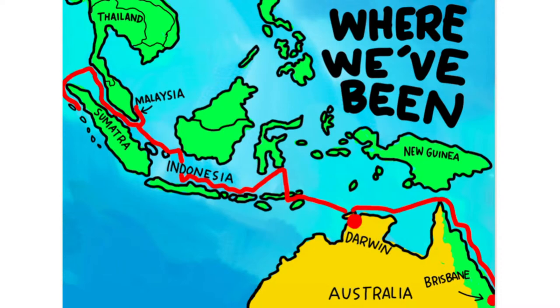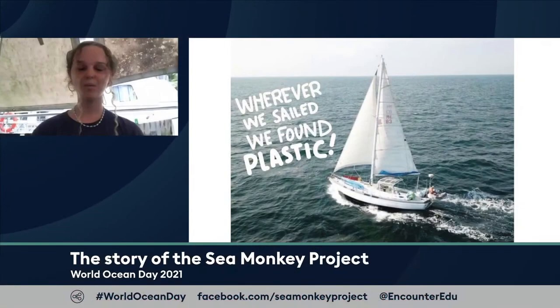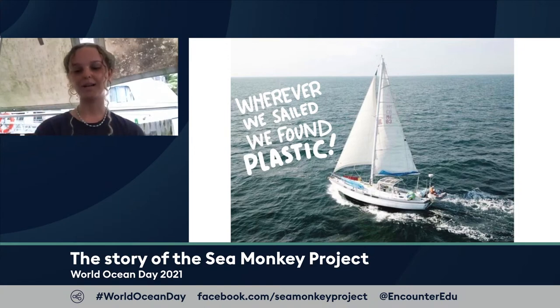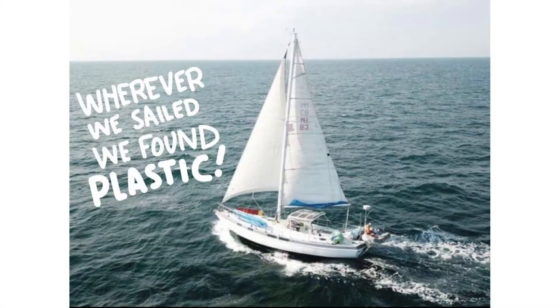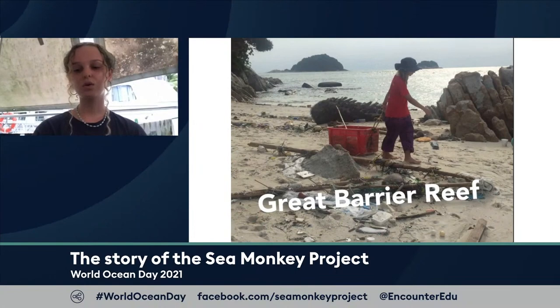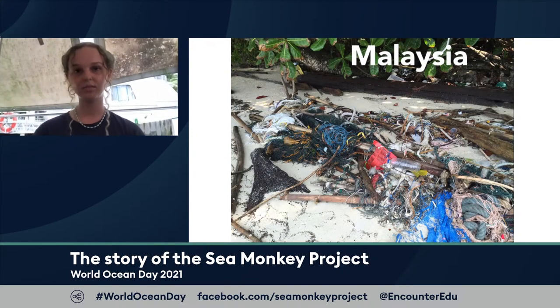We started sailing up the east coast of Australia, up the Great Barrier Reef — the world's largest living organism — and then through Southeast Asia: Indonesia, Malaysia, Thailand. We've done land trips to Myanmar, Cambodia, all sorts of places. But one thing we found recurring everywhere we went — no matter how far from the sea we were — we found plastic. We found plastic in the Great Barrier Reef, in Malaysia, Indonesia, and Thailand. It was so devastating to see how deeply this issue affects sea creatures, land creatures, and every single human being on earth.